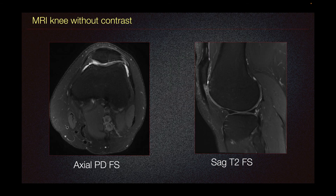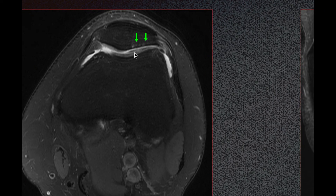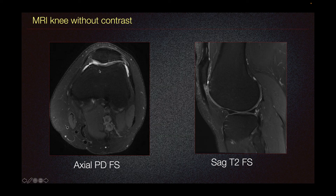MRI knee without contrast should be performed even if x-ray is normal. Here on the same patient we saw earlier, we can see some chondrosis on the lateral facet with underlying subchondral cystic change, and also some chondrosis in the medial trochlea. This is not evident on the x-ray.